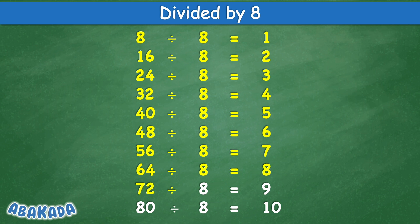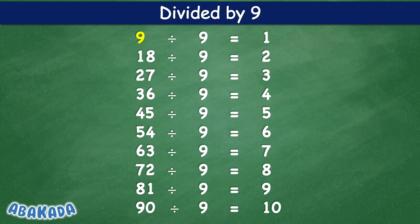72 divided by 8 equal 9, 80 divided by 8 equal 10. Divided by 9: 9 divided by 9 equal 1, 18 divided by 9 equal 2, 27 divided by 9 equal 3, 36 divided by 9 equal 4, 45 divided by 9 equal 5, 54 divided by 9 equal 6, 63 divided by 9 equal 7, 72 divided by 9 equal 8, 81 divided by 9 equal 9, 90 divided by 9 equal 10.